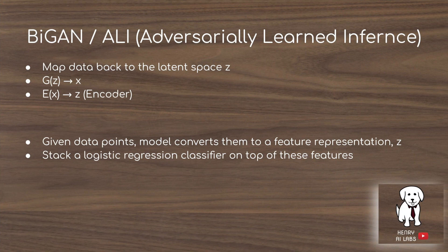The BiGAN, or ALI (Adversarial Learned Inference), maps data back to the latent space Z. You have G(Z), the generator that takes a random vector sampled from a Gaussian prior and produces images, and then E(X), the encoder that takes images and maps them back to the latent space.